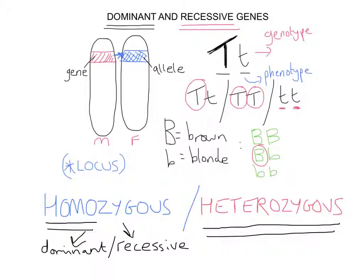So ultimately, dominant genes are genes that overpower recessive genes, and if they're present they will be expressed. You need two recessive genes to show a particular recessive trait. For any characteristic, you'll have two genes controlling it — one on the chromosome from the mother and one on the chromosome from the father. There are 46 chromosomes within the nucleus of a body cell, with genes all along each chromosome, always paired with the gene and its allele — the alternate version of it.